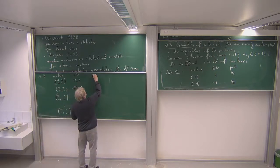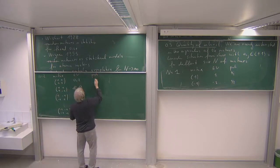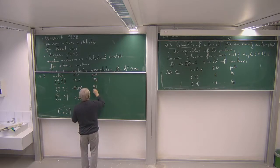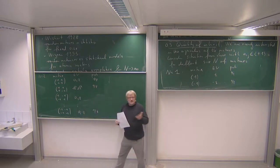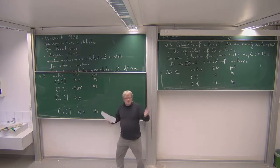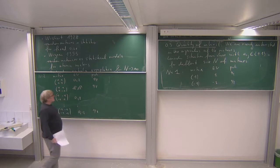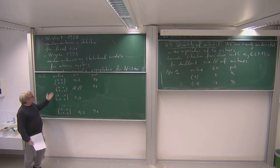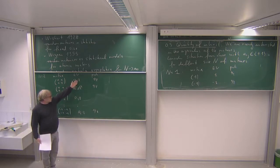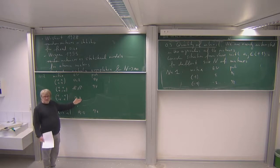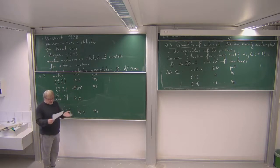All those eight matrices each have probability 1/8. Again there's not much structure to see — but the question is what happens if n is getting bigger.